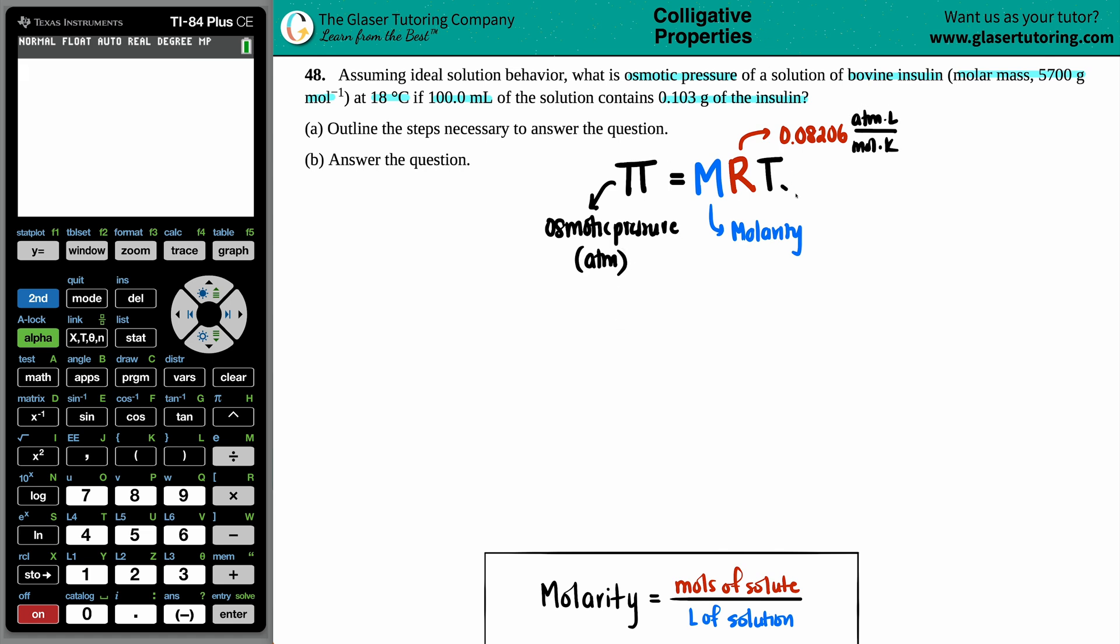And the T value is the temperature. Since there's a K value for Kelvin in the R value, this has to be in Kelvin. Let's start off with letter A. We need to outline the steps. If we want to find that osmotic pressure, let's work from left to right. Do we have a molarity?